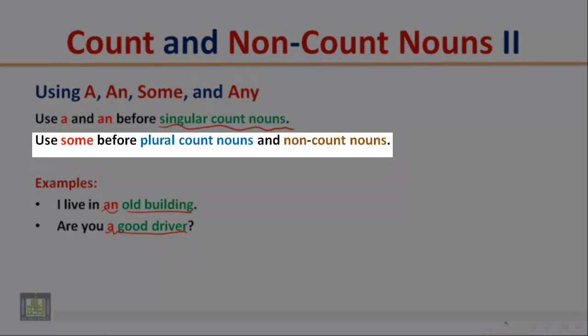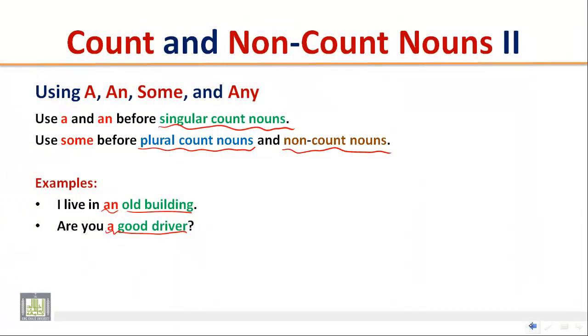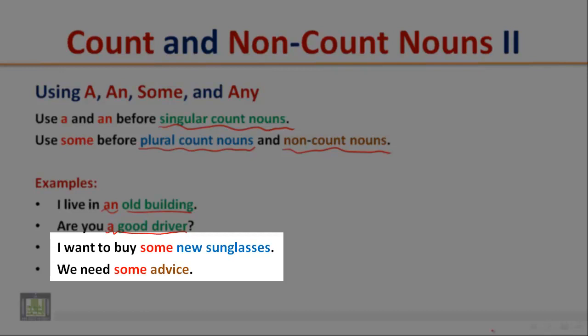Use some before plural count nouns and non-count nouns. Examples: I want to buy some new sunglasses. Some here is used with a plural count noun. We need some advice. The word some here is used with a non-count noun.